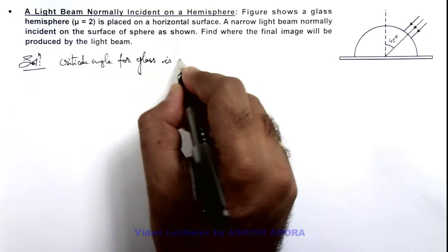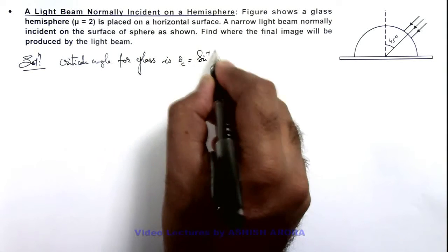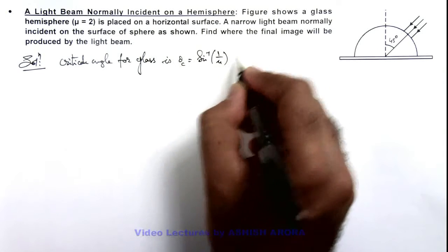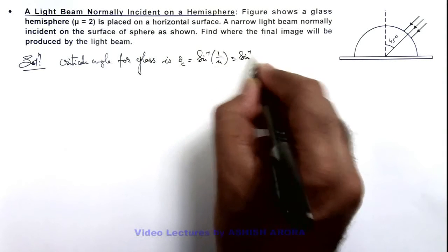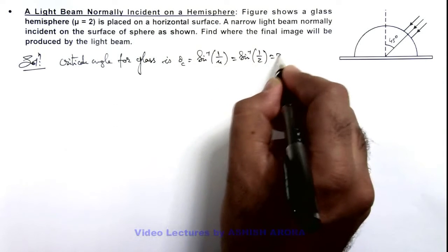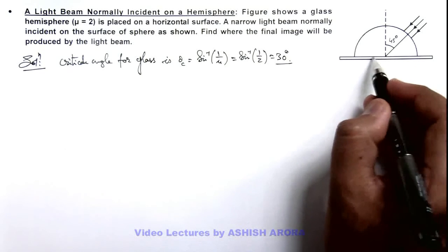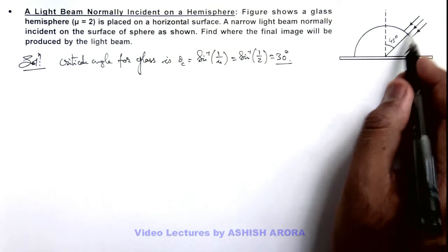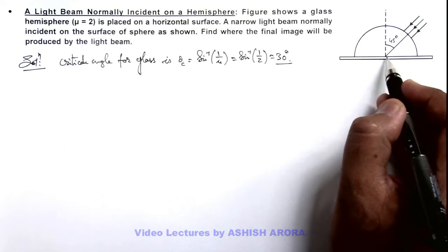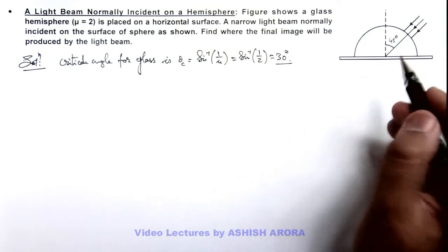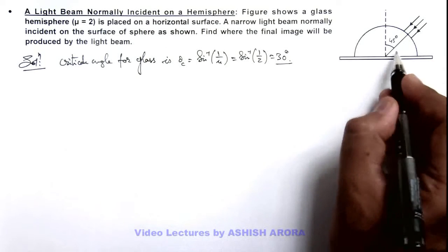This theta c we can write as sine inverse of 1 by μ, which is sine inverse of 1 by 2, equal to 30 degrees. Here the light beam is incident on the base at 45 degrees. That means all the light rays which fall onto this flat surface will be reflected at the same angle, 45 degrees, because this is greater than the critical angle.